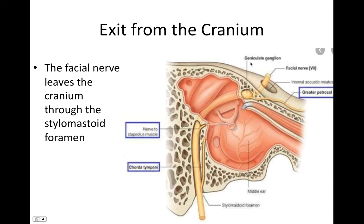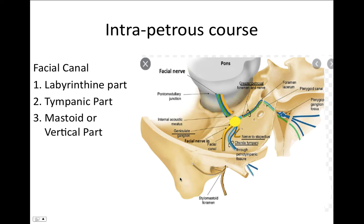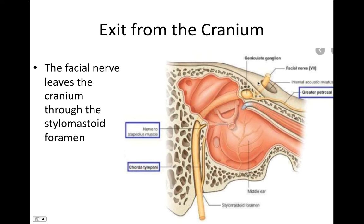This is a cut section of the petrous part of the temporal bone — the mastoid process has been cut to expose the nerve. We can see that the facial nerve exits the cranium from the stylomastoid foramen.